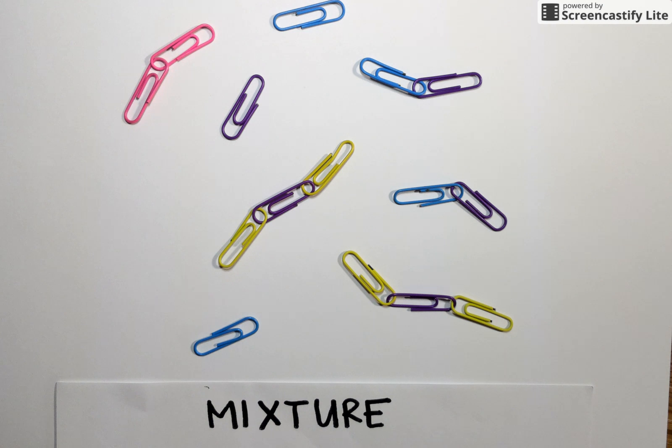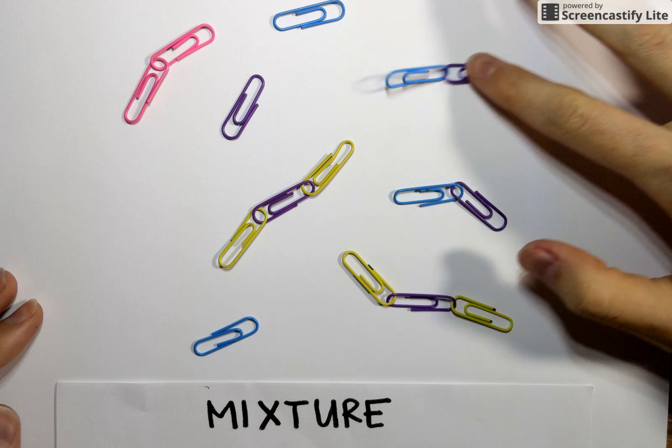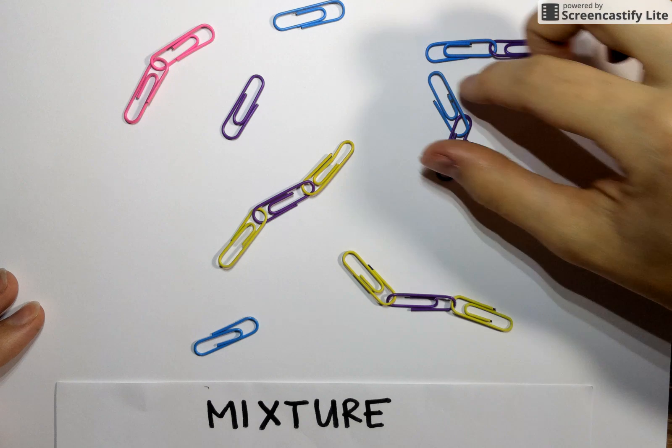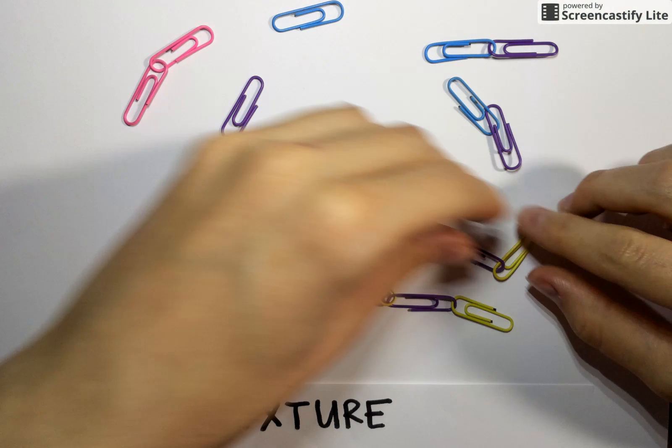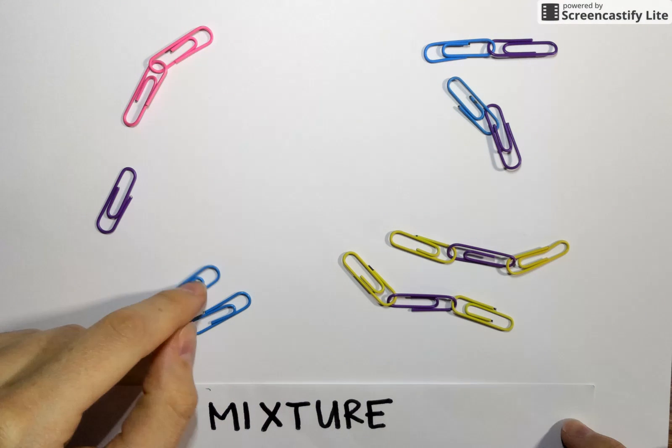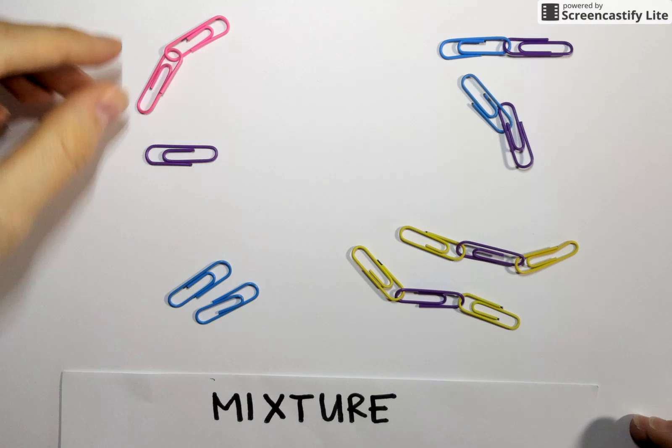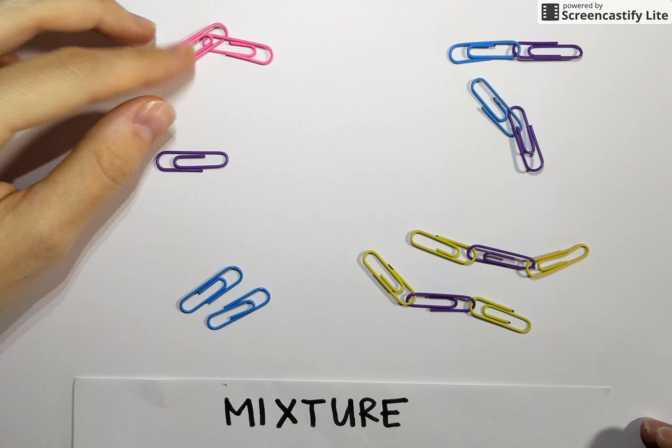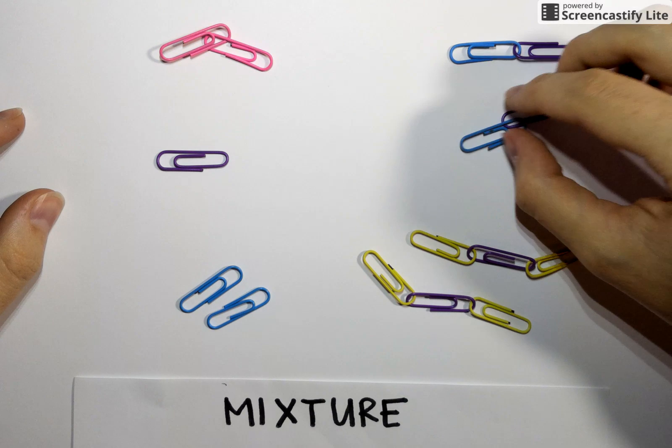Mixtures are also characterized by their ability to be separated physically. What I mean by that is I could actually physically come in and pull apart all these different components of this mixture and sort them into individual piles. A pile of B atoms, a pile of PU atoms, PI molecules, and so on and so forth.